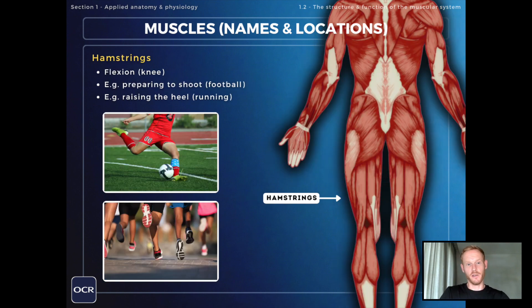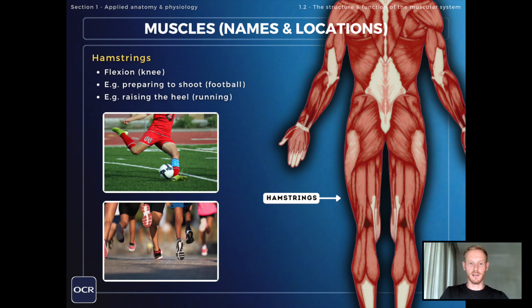The muscles on the back of the thigh are the hamstrings, and these create the opposite movement which is flexion or bending the knee joint. So we're looking at examples like preparing to shoot in football and raising the heel when running.